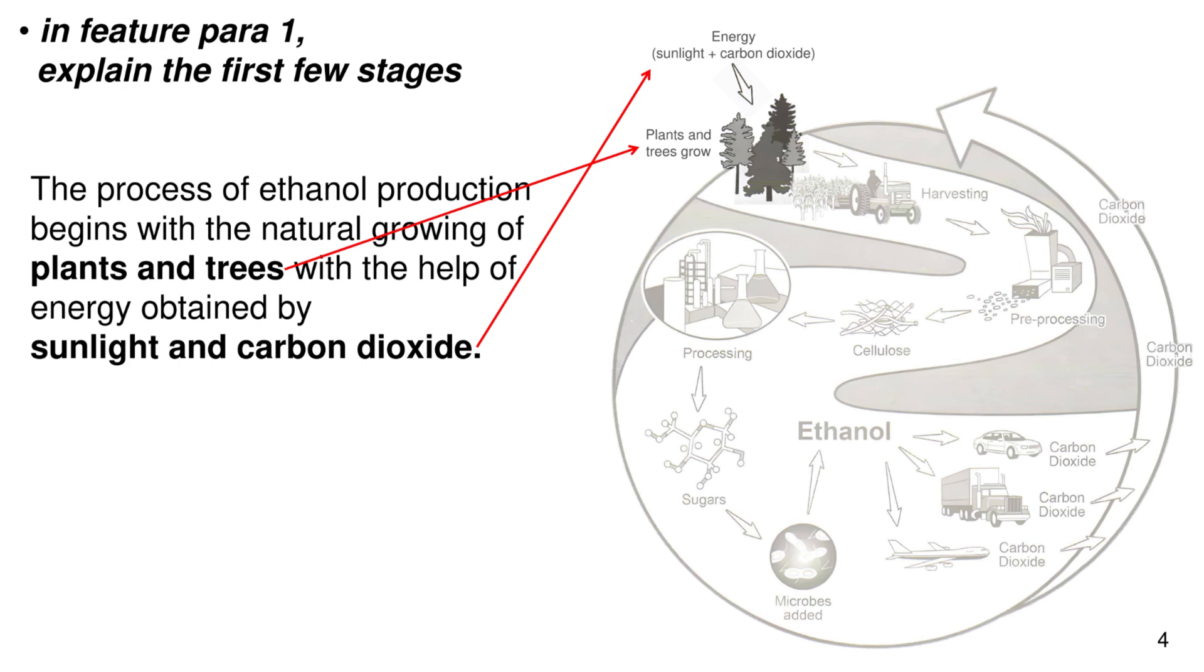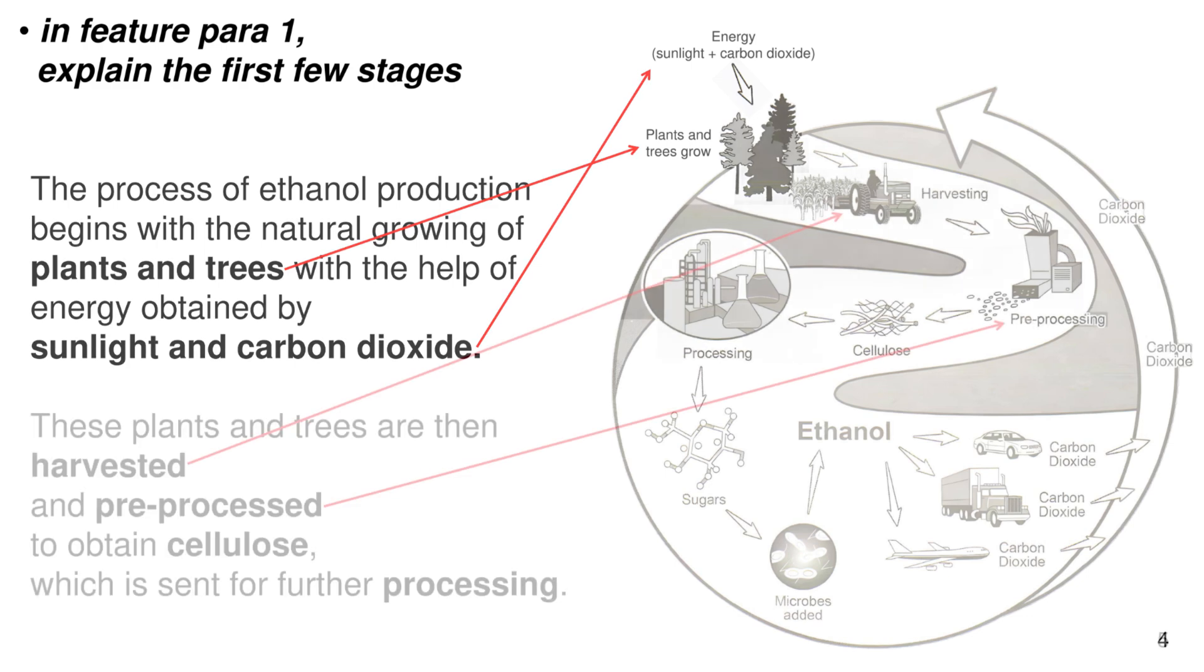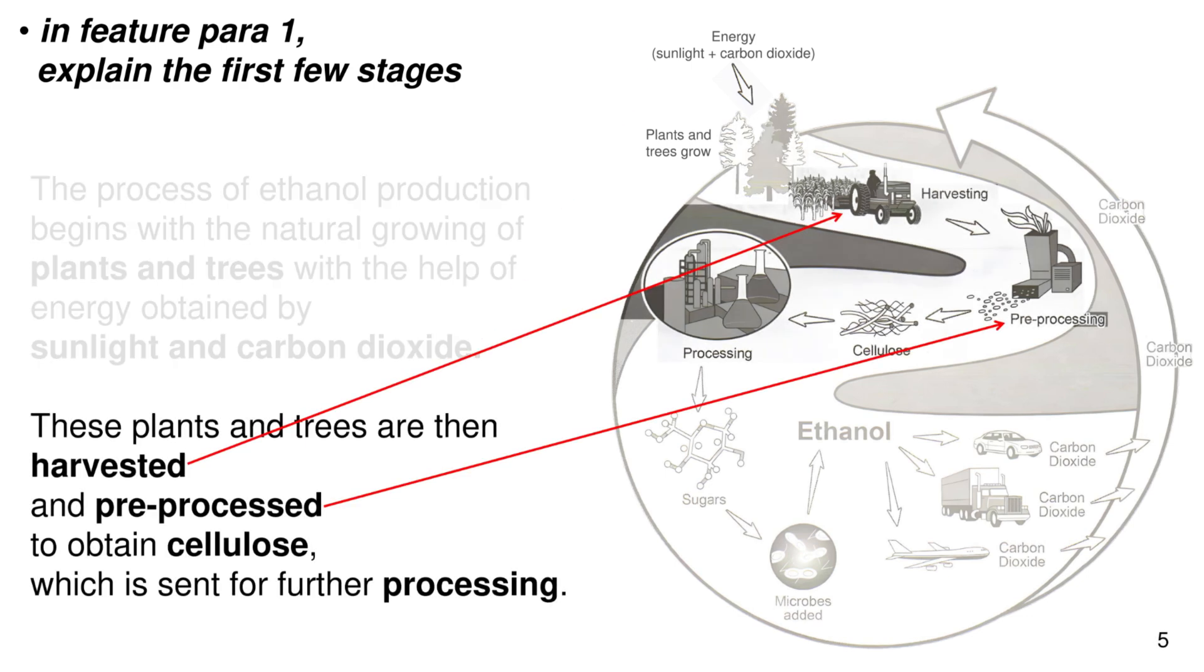In feature paragraph 1, explain the first few stages. The process of ethanol production begins with the natural growing of trees and plants with the help of energy obtained by sunlight and carbon dioxide. These plants and trees are then harvested and pre-processed to obtain cellulose, which is sent for further processing.